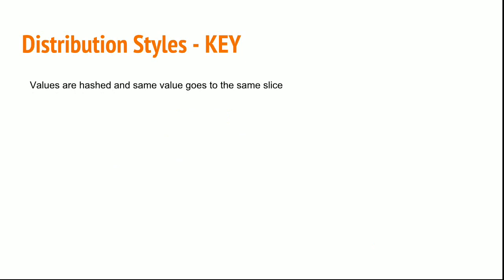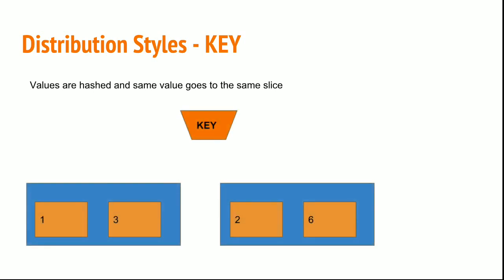With distribution style KEY, values are hashed and the same value goes to the same slice. See here, I already have the values: 1 in slice 1 of node 1, 3 in slice 2 of node 1, 2 in slice 1 of node 2, 6 in slice 2 of node 2.